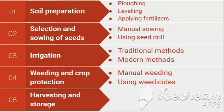There are 5 agricultural practices: 1. Soil Preparation, 2. Selection and sowing of seeds, 3. Irrigation, 4. Weeding and crop protection, 5. Harvesting and storage.